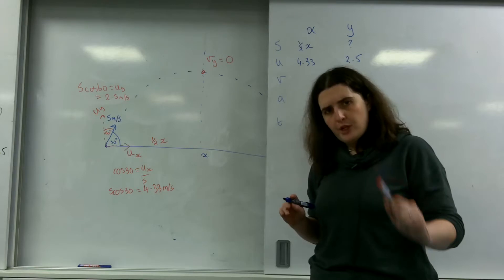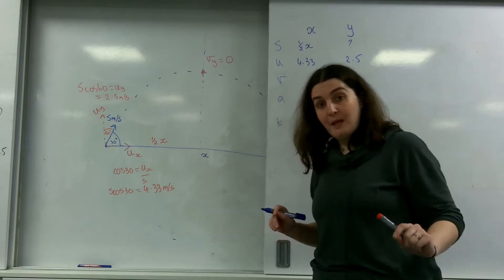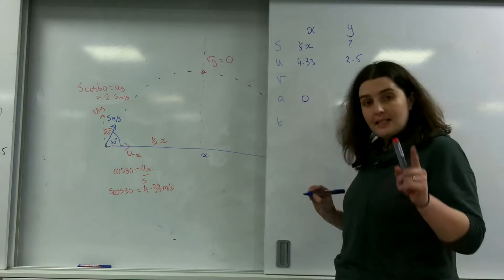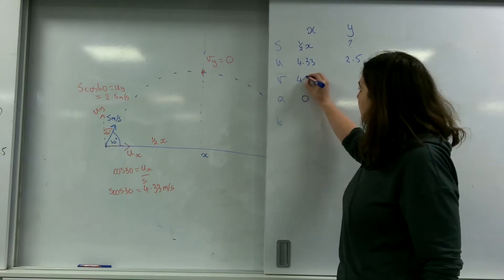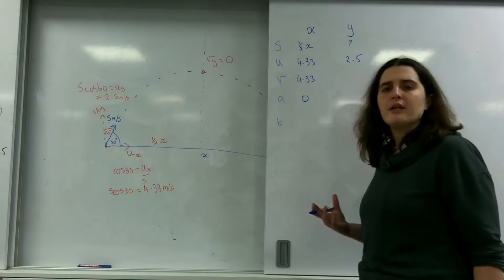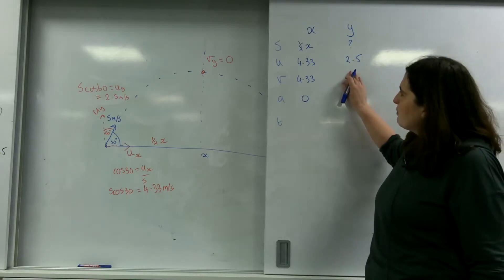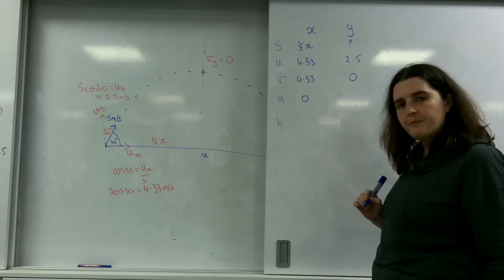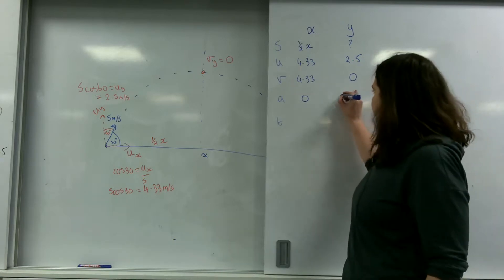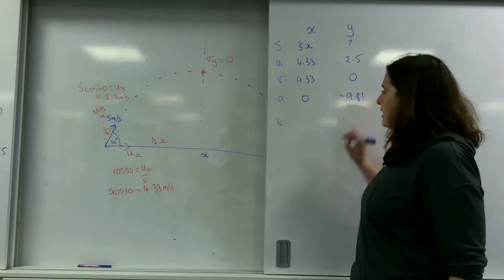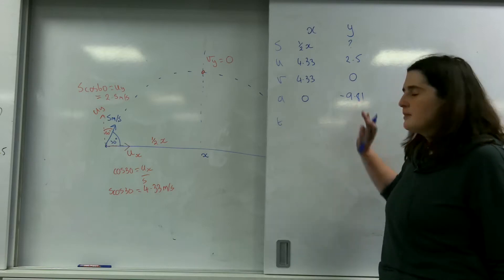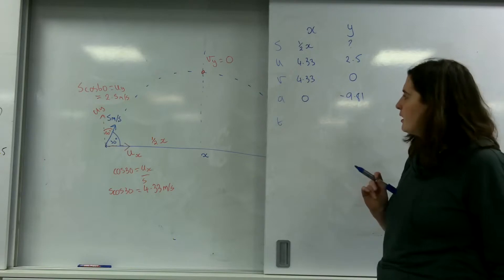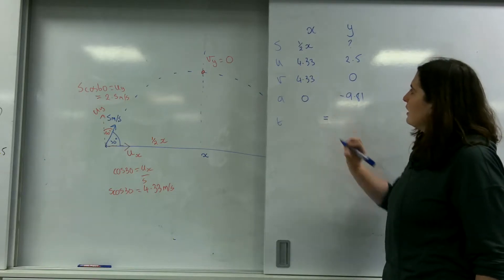As with all projectile motion in paper one and the first year paper, the acceleration in the x-axis is 0, which means that my end velocity will still be 4.33. But because I'm working to halfway, this velocity will be 0. Gravity, the acceleration due to gravity, is minus 9.81. This minus becomes even more important in this one. And I know my times are equal.